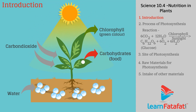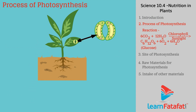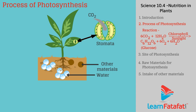Chlorophyll is a green pigment present in the chloroplast of the leaves. The surface of green leaves has small pores called stomata. Carbon dioxide enters the leaves through stomata. Roots absorb water and other material from soil and transport it to the leaves and other parts of the plant. Chlorophyll pigment absorbs sunlight.